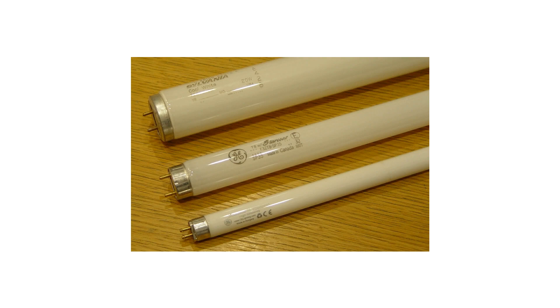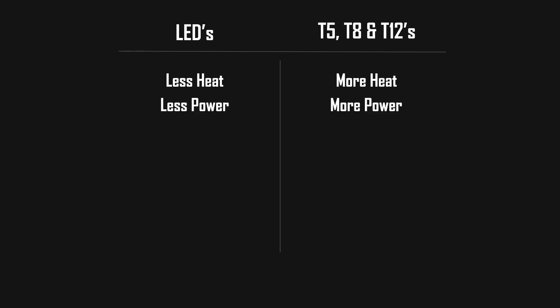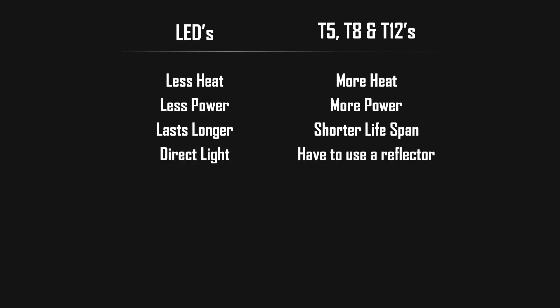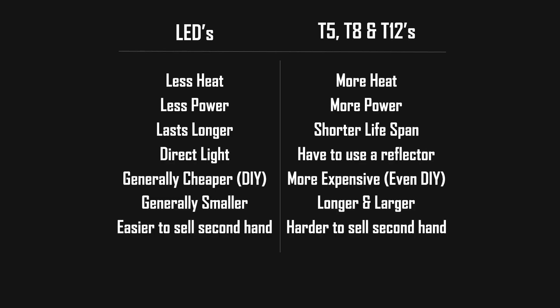Let's look at the different types of light that you get. The T12s are the fluorescent old very fat ones, whereas T8s are the newer thinner fat ones, and T5s are the newer skinny ones, and lastly LEDs, which is the latest technology. LEDs produce less heat, whereas the others produce more heat. LEDs use less power, they generally last longer, and they have direct light that shines into the tank, whereas with T5s, T8s and T12s, you have to use a reflector because the light comes out at a 360 degree angle. LEDs are also generally cheaper and smaller, and it is a lot easier to sell your LEDs secondhand than it is with the T5s, T8s and T12s.